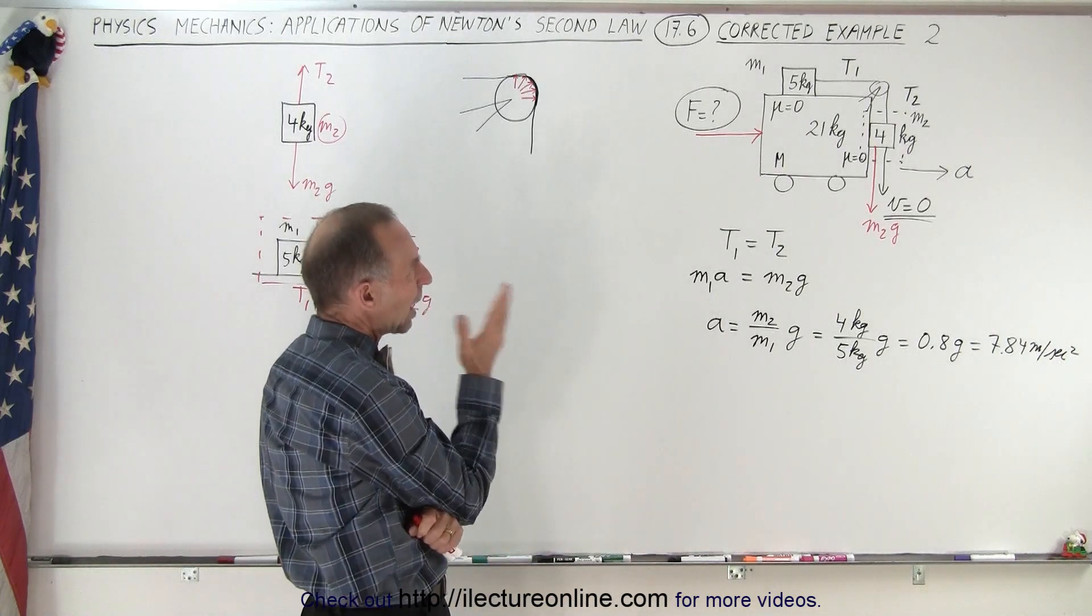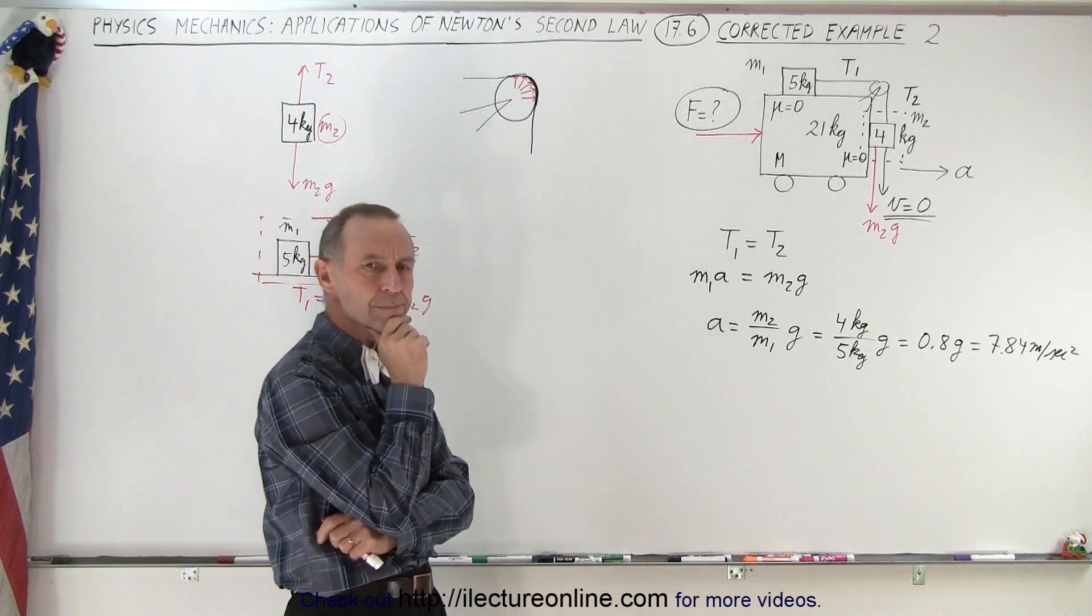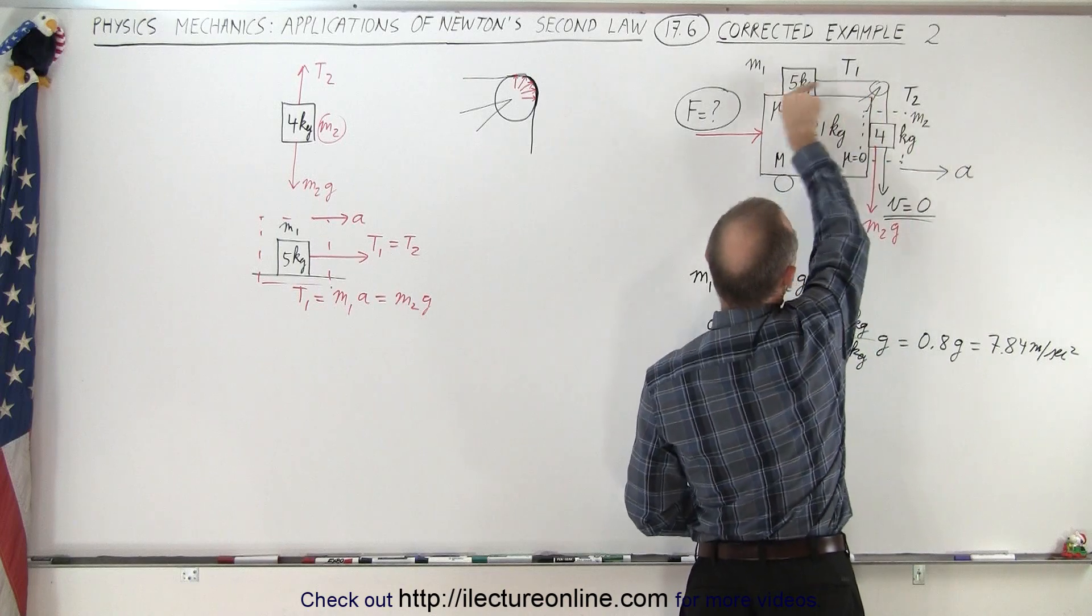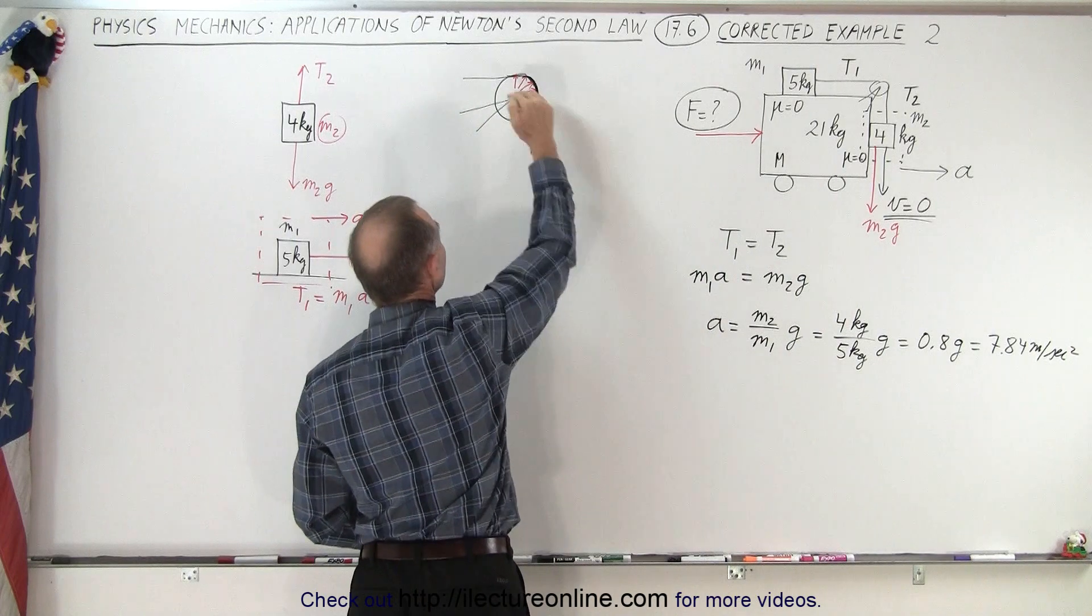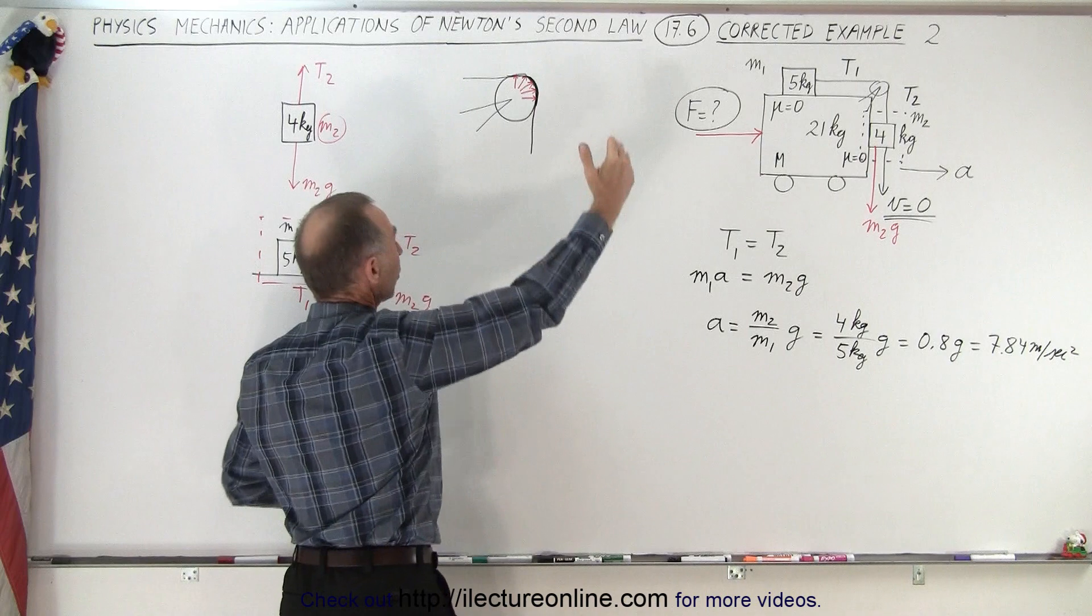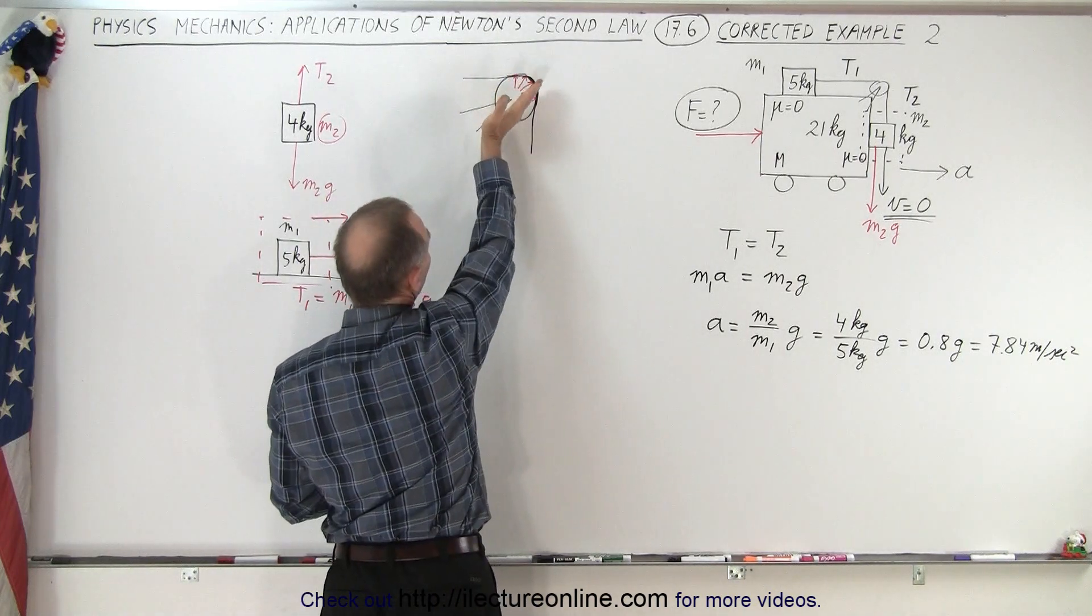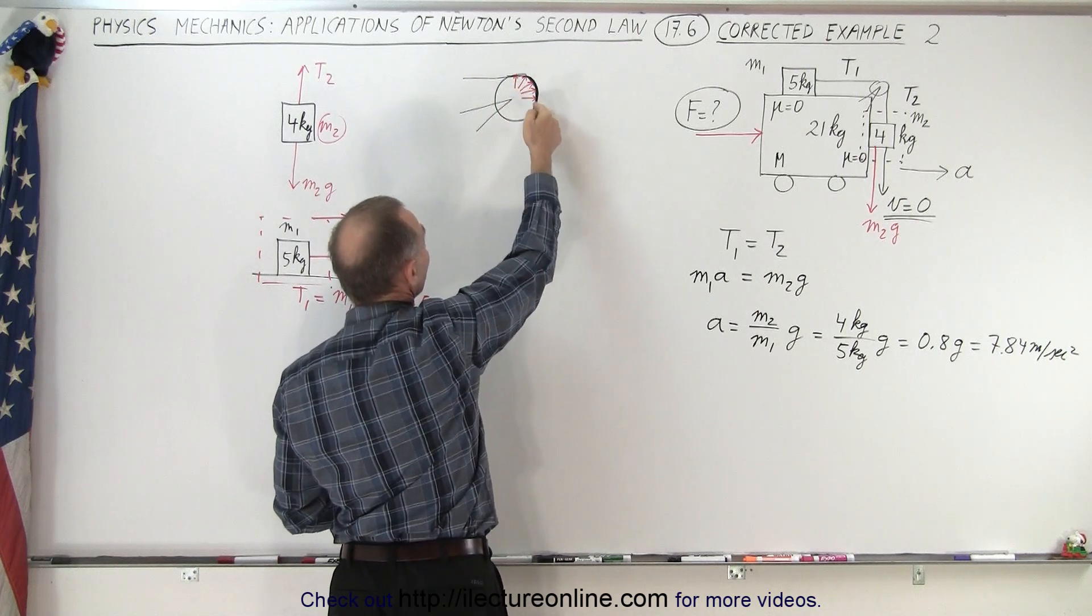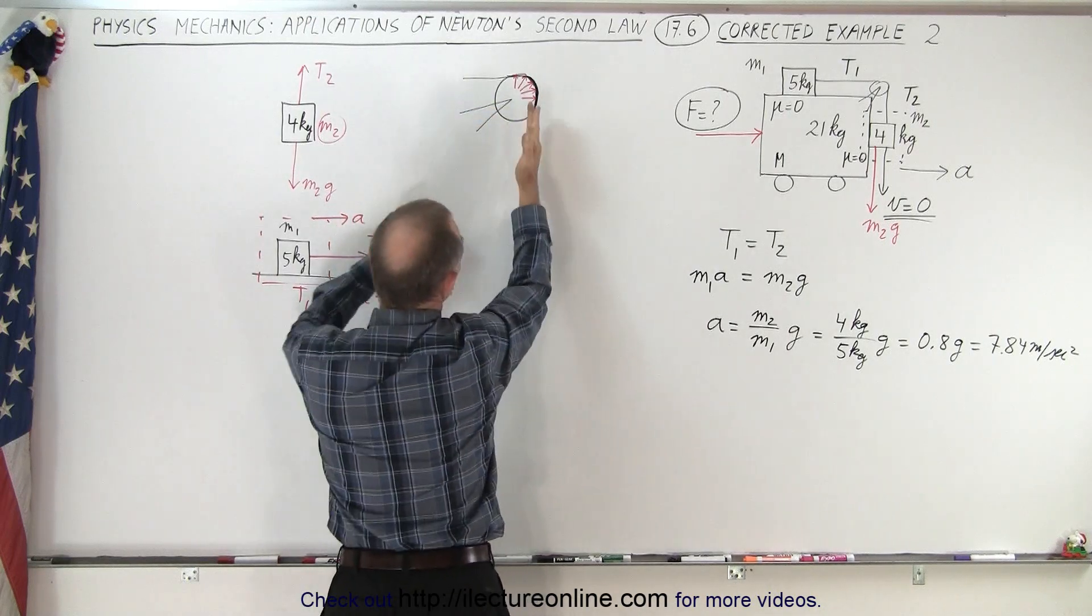But then the question is, well, how does that block m1 get pulled to the right? Because after all, this force is acting downward, this force is acting upward, but how does that work? Well, it turns out when we take a closer look at what happens at the pulley, this rope is very tight around the pulley, it pushes against the pulley, and then the pulley pushes back, and those forces will be perpendicular to the surface. So some of these forces will actually act in this direction, which means that the pulley will push this whole thing to the right.